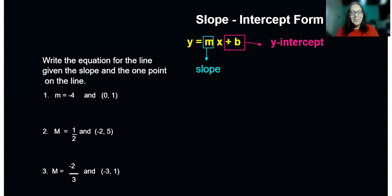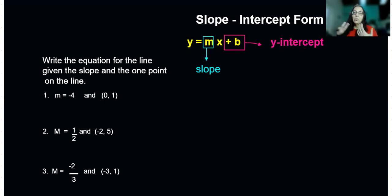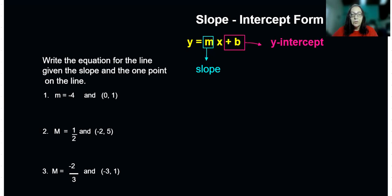Betsy here again, and today we're going to write equations for lines — this time given a slope and a point. Remember, to write the equation of a line using slope-intercept form, we need m and we need b. We've got a good start because we're given m.